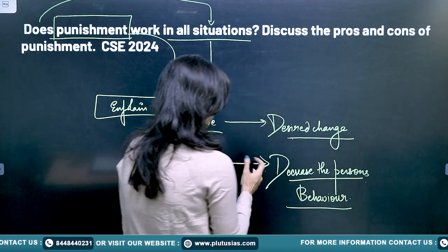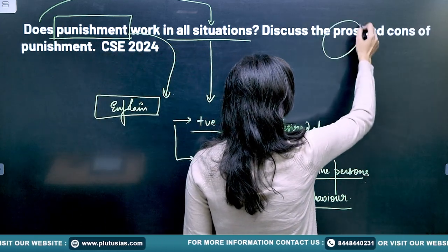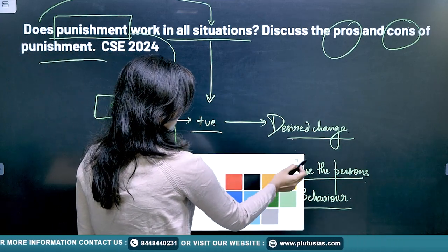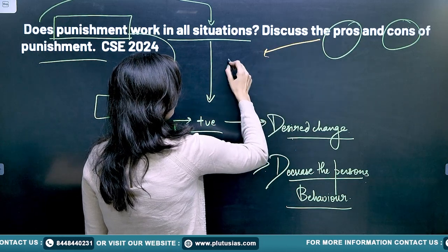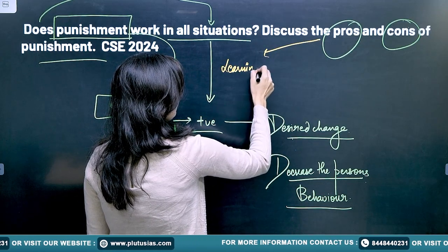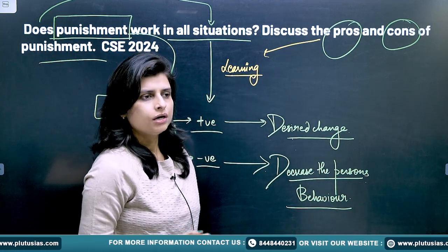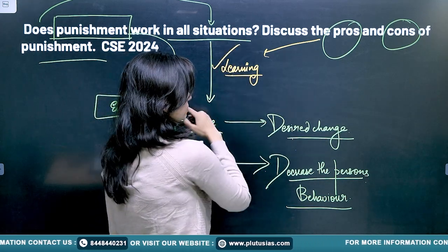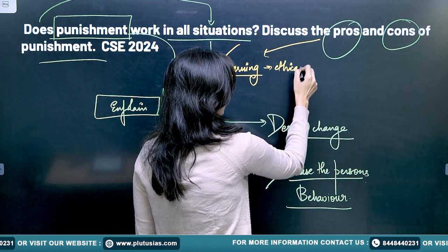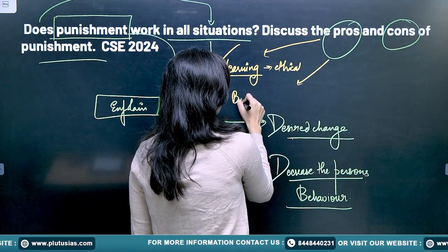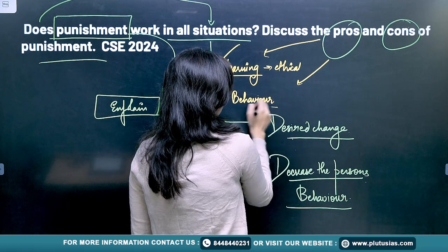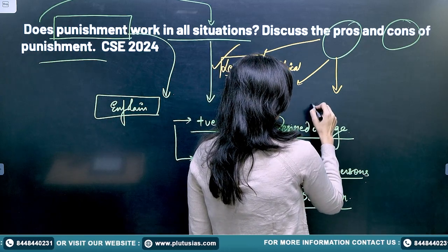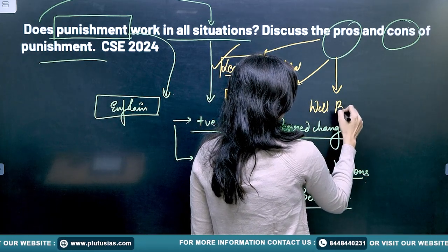You have to talk about the pros and the cons of punishment. When it comes to pros, you will inculcate a learning habit — for example, if you want to make a child learn about discipline, you punish the child. That is the pro part: you are going to make the child learn ethical things, bring desired changes in the behavior of the person, and make them a more well-behaved person.